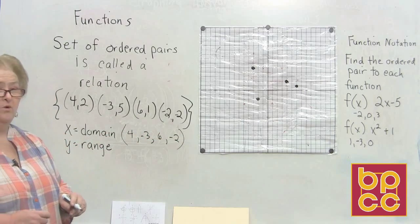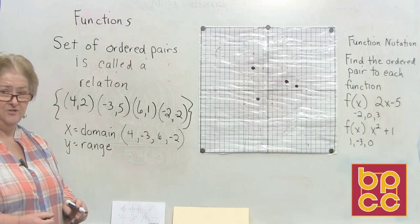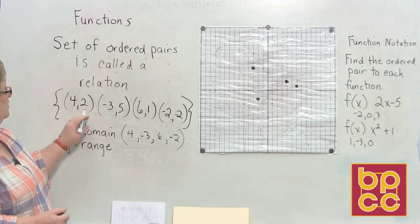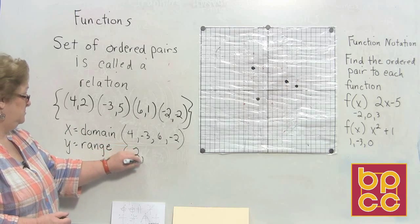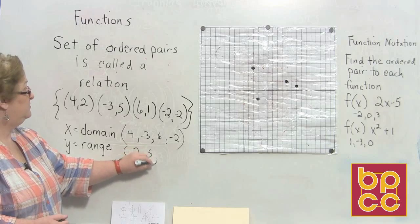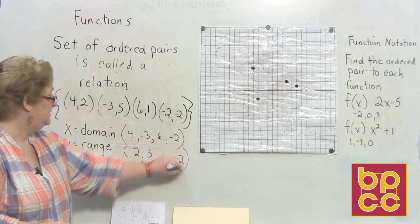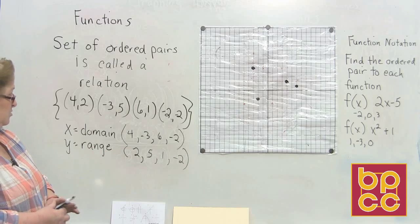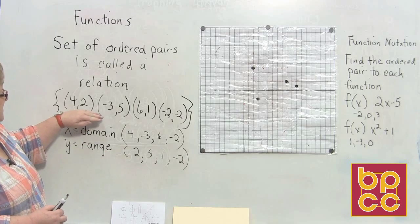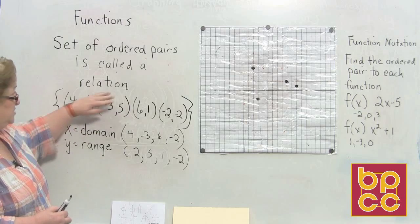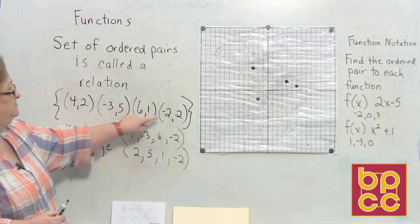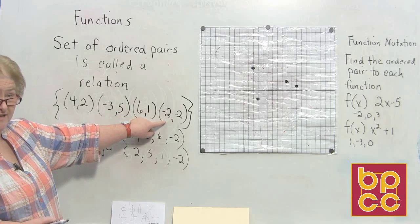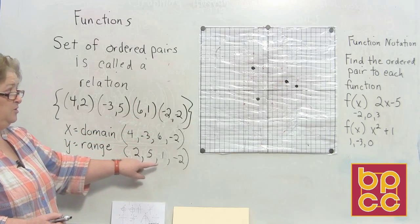And if we want to know the Y's, which is referred to as the range, we're going to look at our second number. So we have a set of ordered pairs here which is called a relation. The domain would be the X's, and if we have used X more than one time we can just write it once. And then the range would be the Y's.